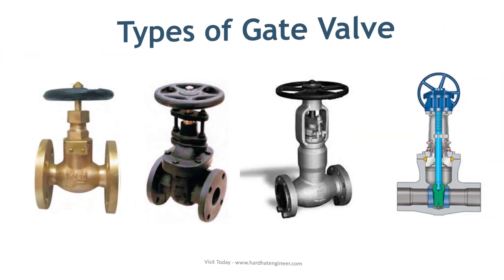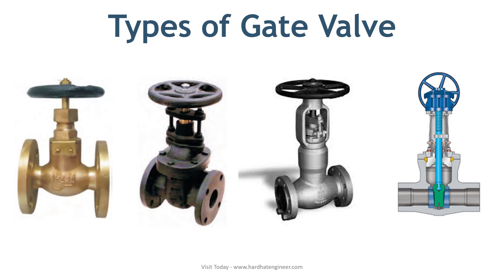Types of gate valve based on body-bonnet connection: 1. Screwed bonnet — this is the simplest design available and is used for inexpensive valves. 2. Bolted bonnet — this is the most popular design used in a large number of gate valves; it requires a gasket to seal the joint between the body and bonnet. 3. Welded bonnet — a popular design where disassembly is not required; lighter in weight than bolted bonnet counterparts. 4. Pressure seal bonnet — used extensively for high-pressure, high-temperature applications; the higher the body cavity pressure, the greater the force on the gasket.